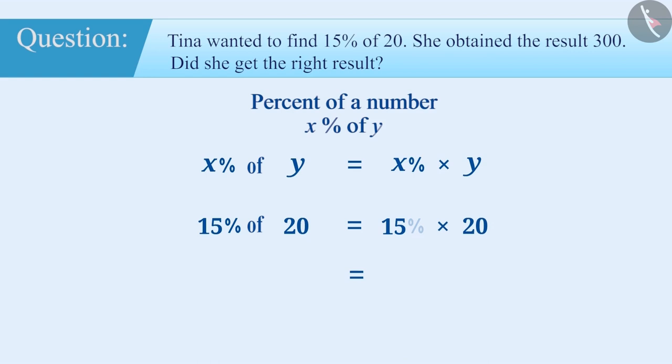The correct understanding is that the use of operator 'of' here expresses the operation of multiplication. In this way, 15% of 20 is equal to 15% into 20, which is equal to 15 by 100 into 20, which is equal to 3.